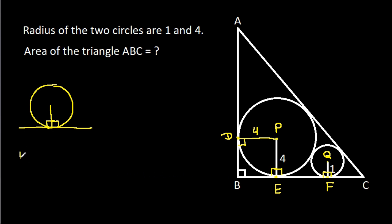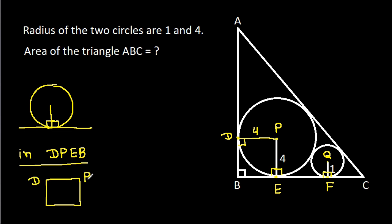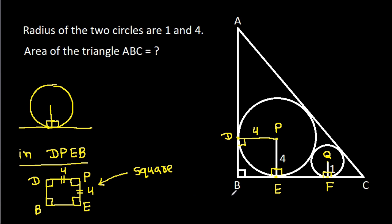Now in quadrilateral DPEB, three angles are 90 degrees, so this fourth angle will also be 90 degrees. And we have DP equal to PE, that is 4. That means it will be a square. So BE will be also 4 and BD will be also 4.